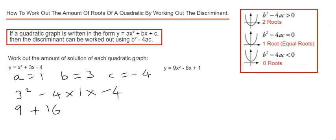So 9 add 16 is 25. Our discriminant is 25.